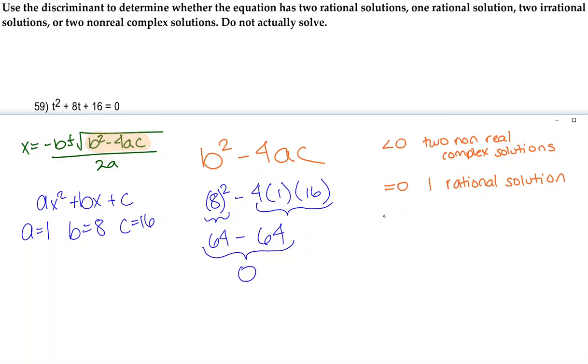And then if it is positive, meaning greater than 0, it can either go one of two ways. If it's also a perfect square, then you're going to have two rational solutions. But if it's not a perfect square, then you're going to have two irrational solutions.